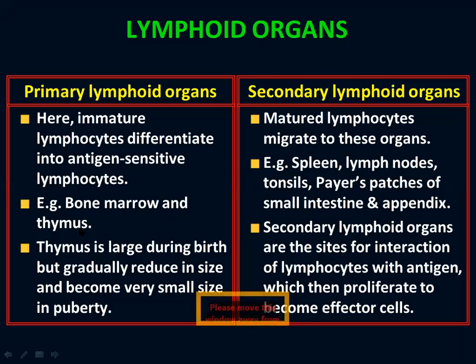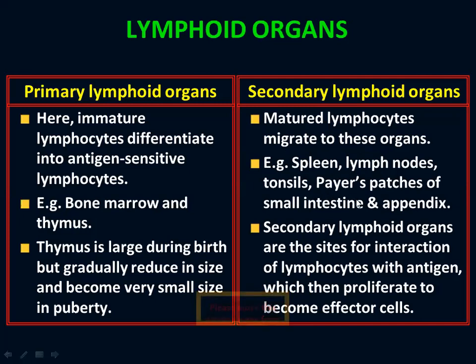The names B and T are based on their maturation sites. The thymus is large at birth but gradually reduces in size and becomes very small at puberty. Coming to the secondary lymphoid organs — matured lymphocytes migrate to these organs. After maturation, for activation, they come here: the spleen, lymph nodes, tonsils, Peyer's patches of the small intestine, and the appendix.